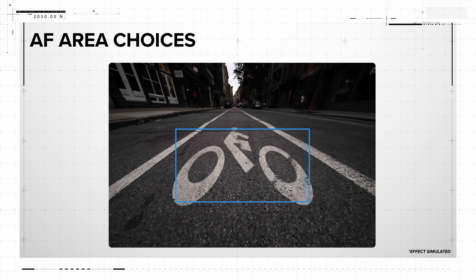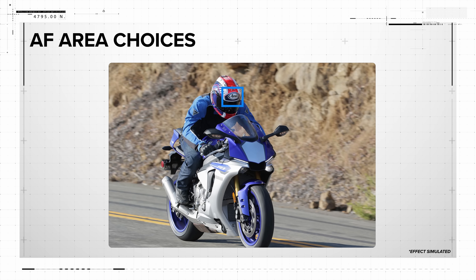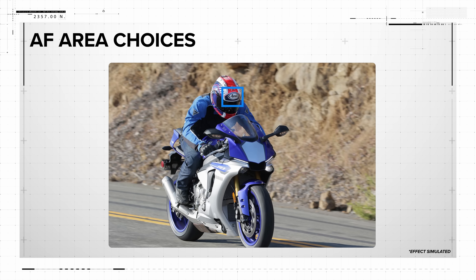Especially if you're set for servo AF, where autofocus expects subject movement, you can temporarily toggle back and forth between letting the camera identify a subject and use tracking to follow it if something moves, or using your initial fixed AF area and its location. Using a button to turn whole area AF tracking on and off while autofocus is active will do this, and you'll see it in the viewfinder of the EOS R1 or R5 Mark II cameras.